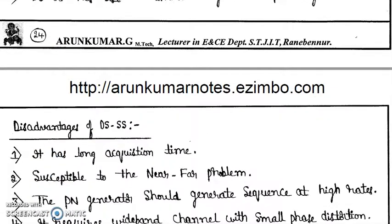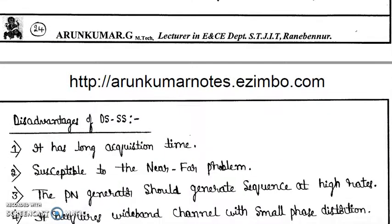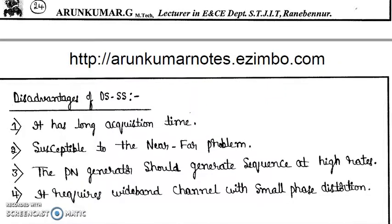And the disadvantages it has long acquisition time and it has some near far problem. The PN generator should generate sequence at high rates. It requires wide band channel with small phase distortion. All these disadvantages are overcome in frequency hopping and out of slow frequency hopping and fast frequency hopping, fast frequency hopping is more secure but it is more prone to noise.